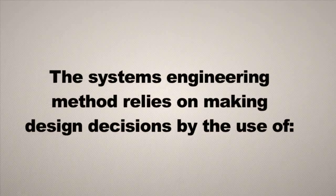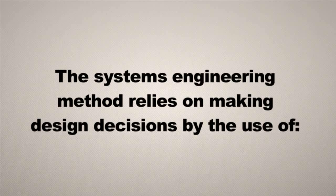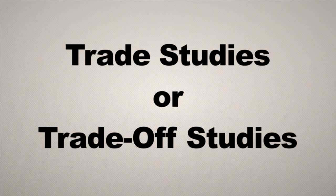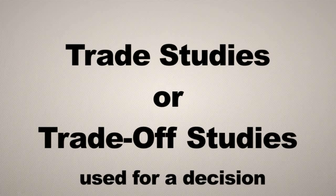The systems engineering method relies on making decisions all along the way through the design process by the use of trade studies, sometimes called trade-off studies. These studies allow you to make decisions, whether it's early on in requirements development about which requirement might be best to levy on your system, what level of performance might be best, all the way down to which propulsion system might be best for your mission.